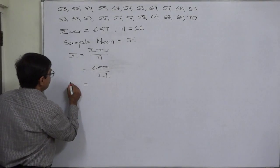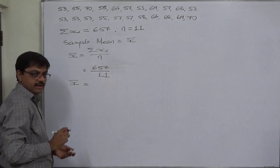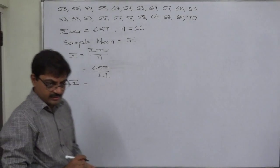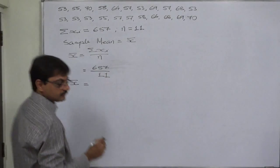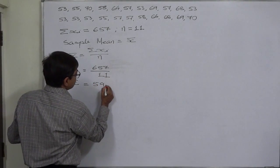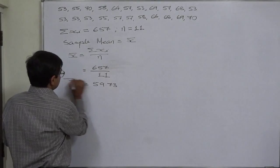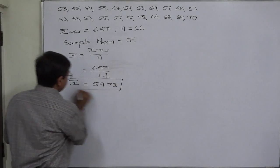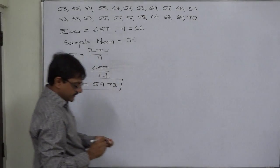So, up to two decimal places, the value of x-bar is 59.73. This is the mean of the data.